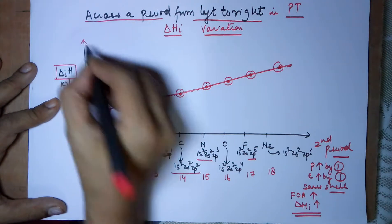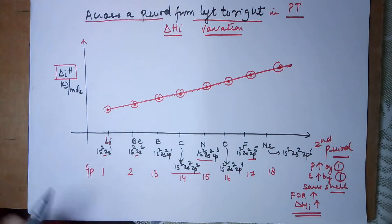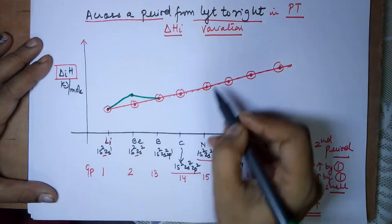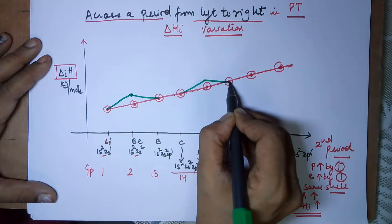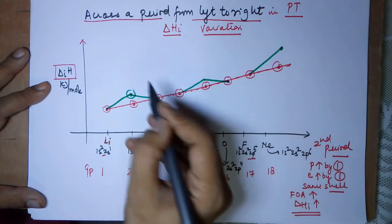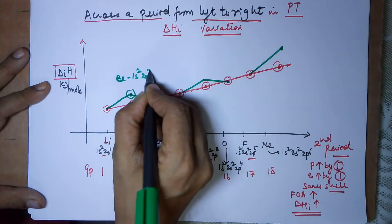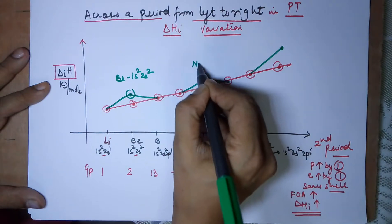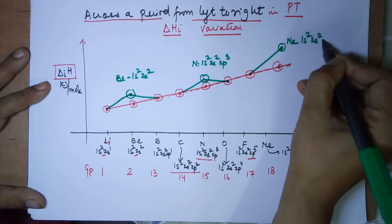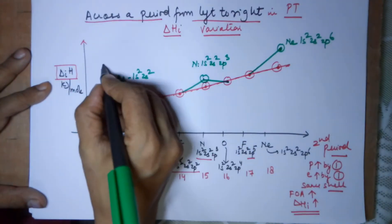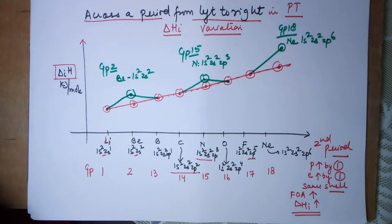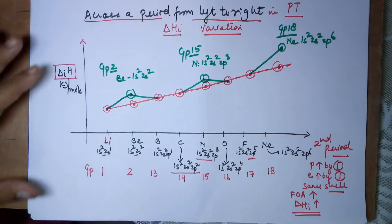The surprising fact is that what is observed differs from the expected line. There is a special case for beryllium (1s2 2s2), a special case for nitrogen (1s2 2s2 2p3), and a special case for neon (1s2 2s2 2p6) — the group 2 member, the group 15 member, and the group 18 member. We find that there is a rise above the expected value for these three elements.